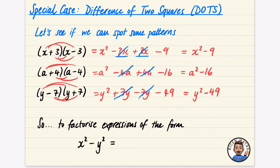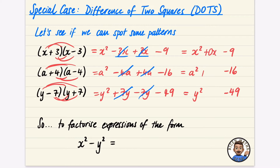The reason the middle terms always cancel is that when you add those numbers together you always get zero. We could think of all these as secretly having an extra term in the middle — technically a 0x, a 0a, and a 0y. So to factorize these, we need two things that multiply to minus 9 but add to 0, which would be 3 and minus 3.